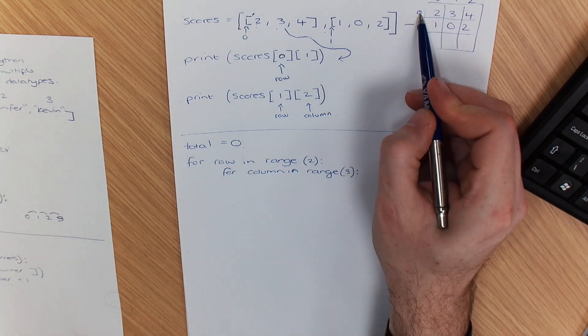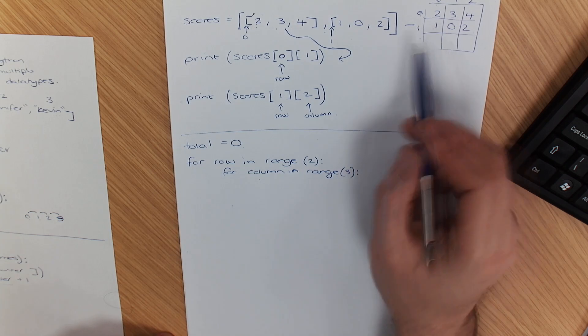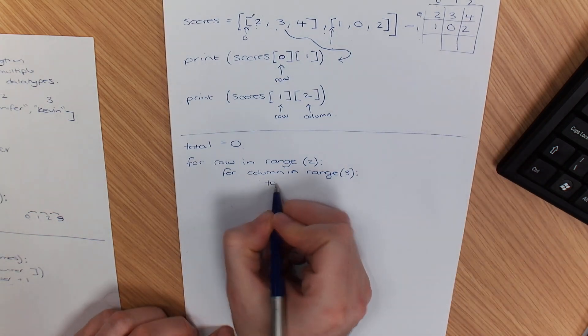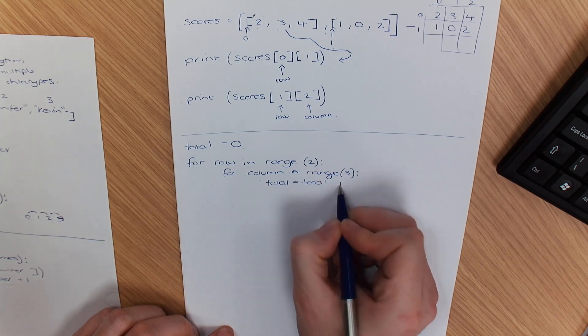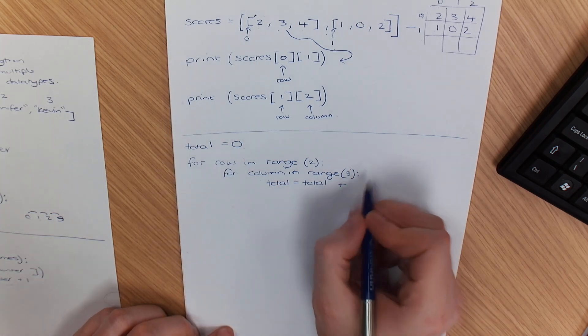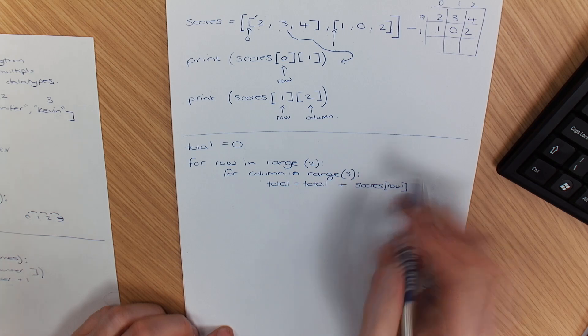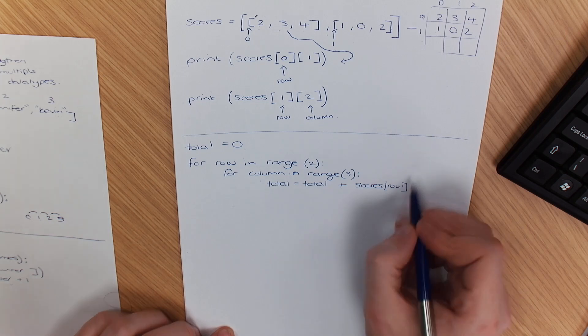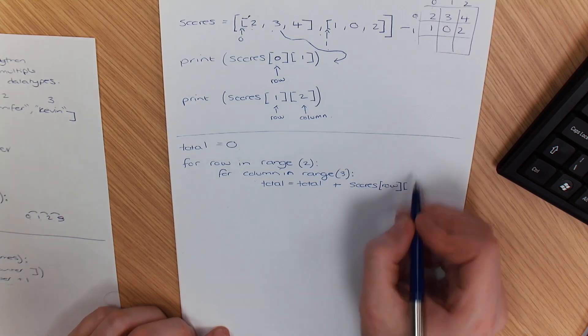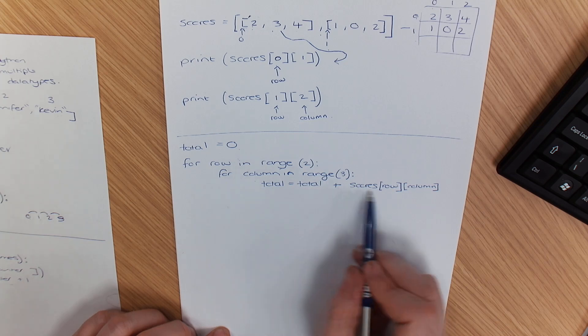Now what that's going to do is start at the first row, then inside that row it jumps into the next loop and now it's going to go by column. But what you can then do is total equals total plus, and we're going to say scores. It's going to be scores, it's going to use the row reference. The row, this will not increase until it's gone to the end of the columns. Row, no I've not put a number in here and I'll explain why in a minute.